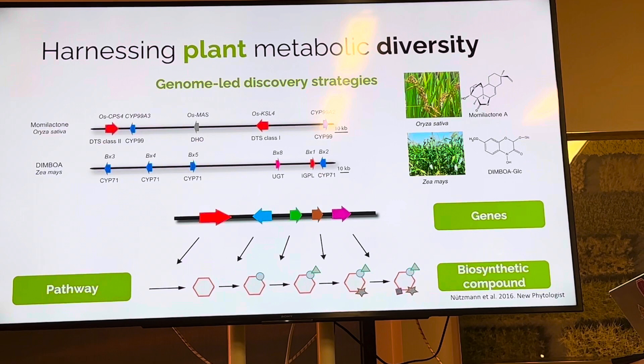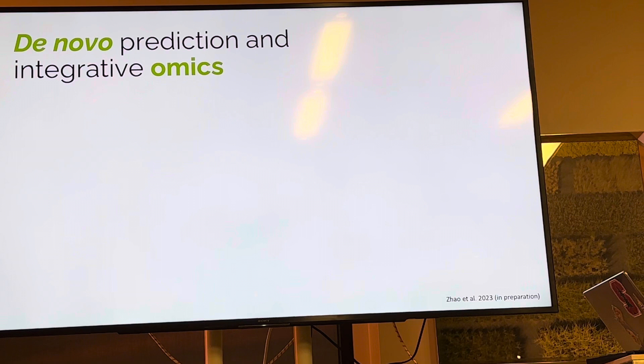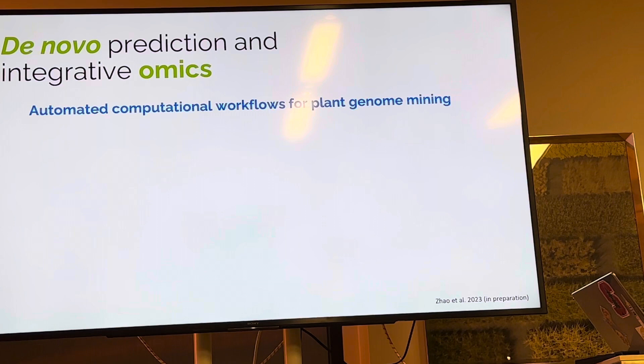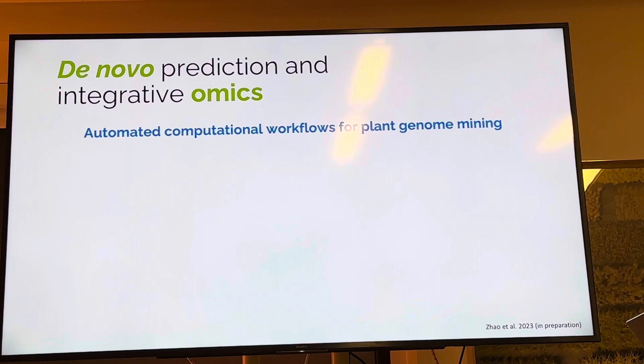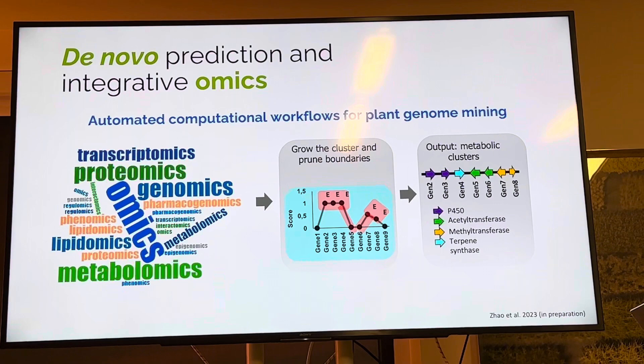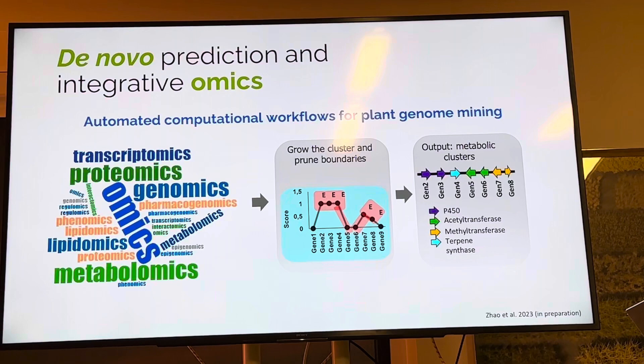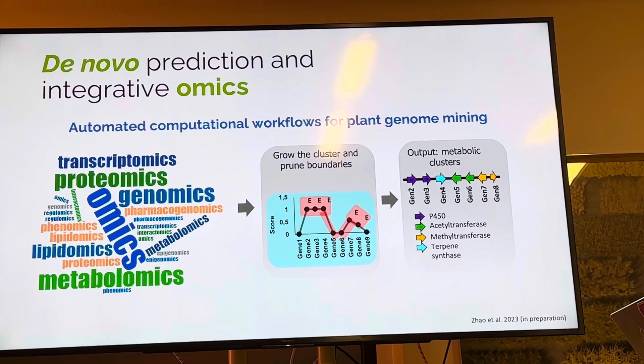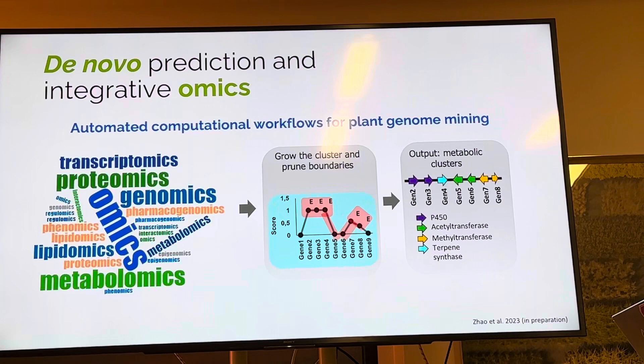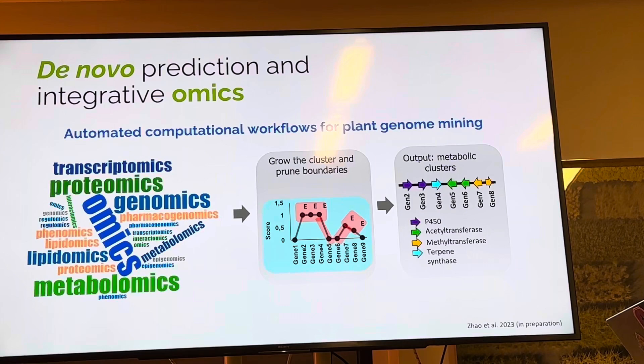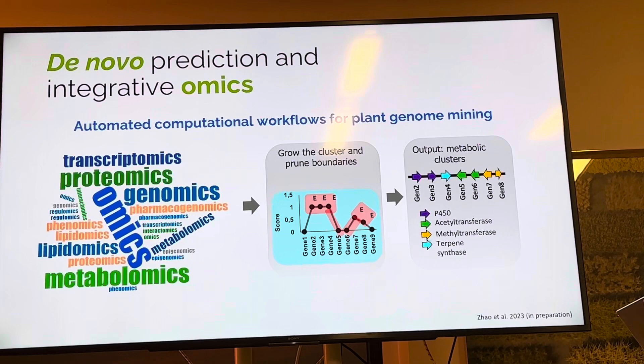By knowing that genes located next to each other in the genome cooperate in a certain pathway to produce a biosynthetic compound, we can draw predictions about what those genes are doing. In my lab, we are exploring this knowledge through de novo prediction and integrative omics — automating computational pipelines that find gene clusters in the genome by integrating different omics data sources such as genomics, transcriptomics, and epigenomics, running through the genome with mining pipelines able to define the likely boundaries of these gene clusters.